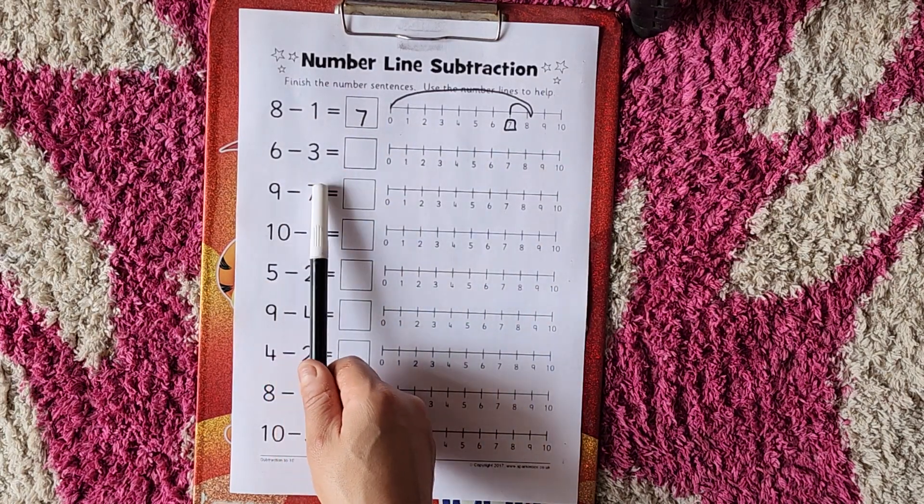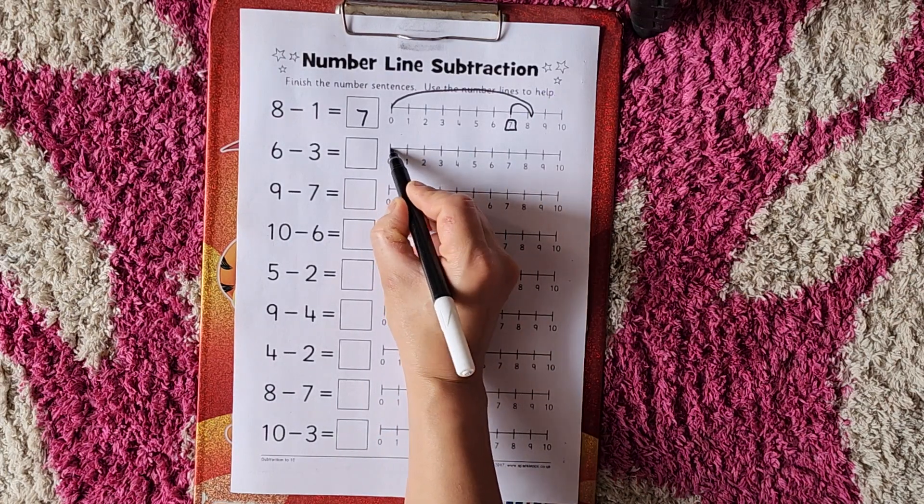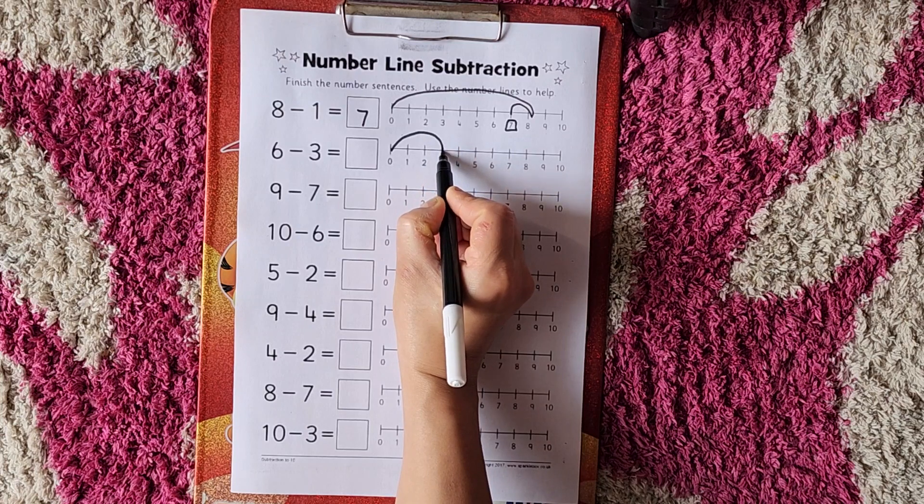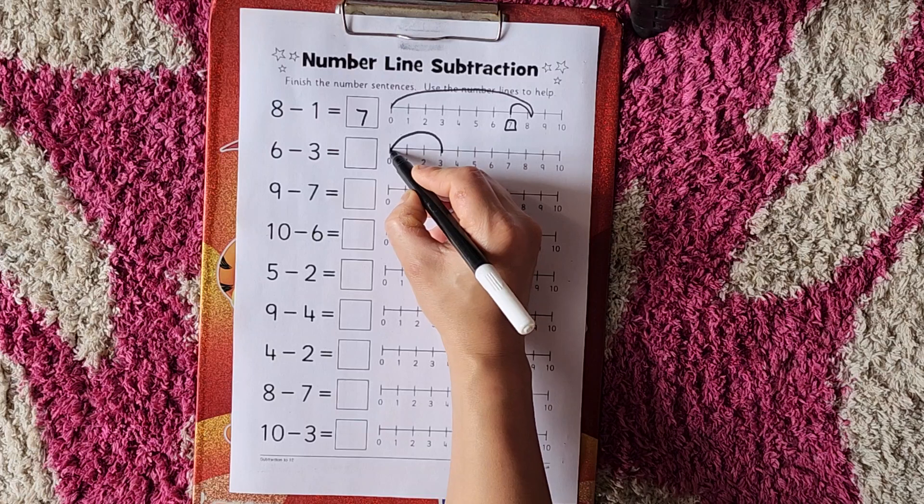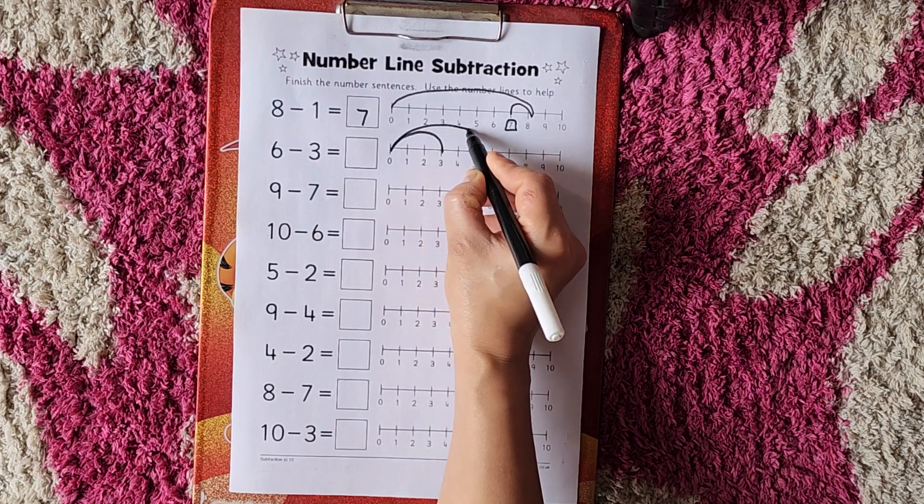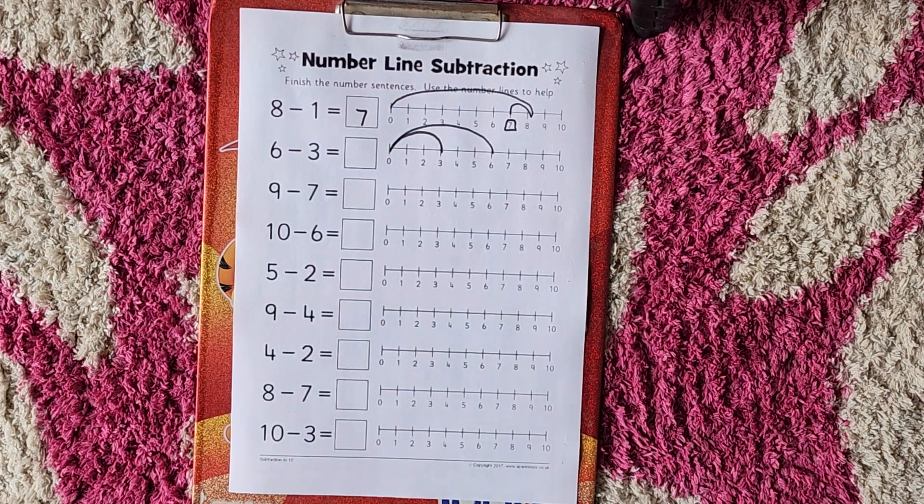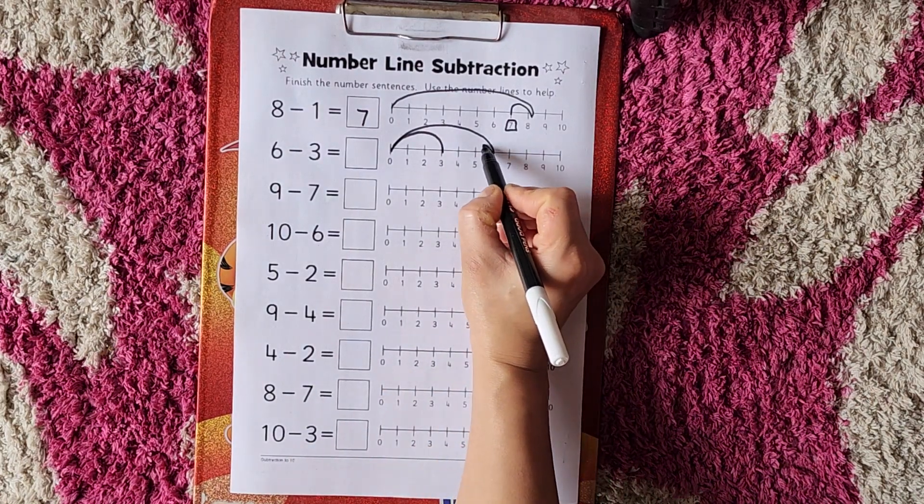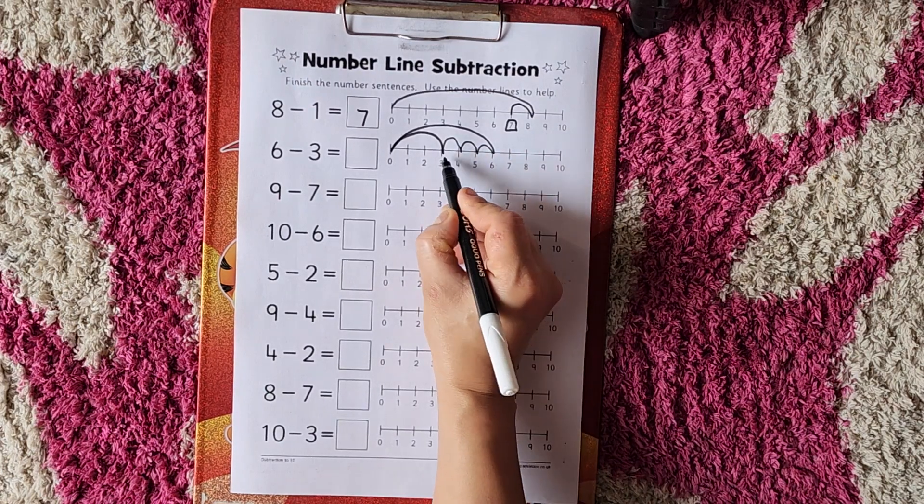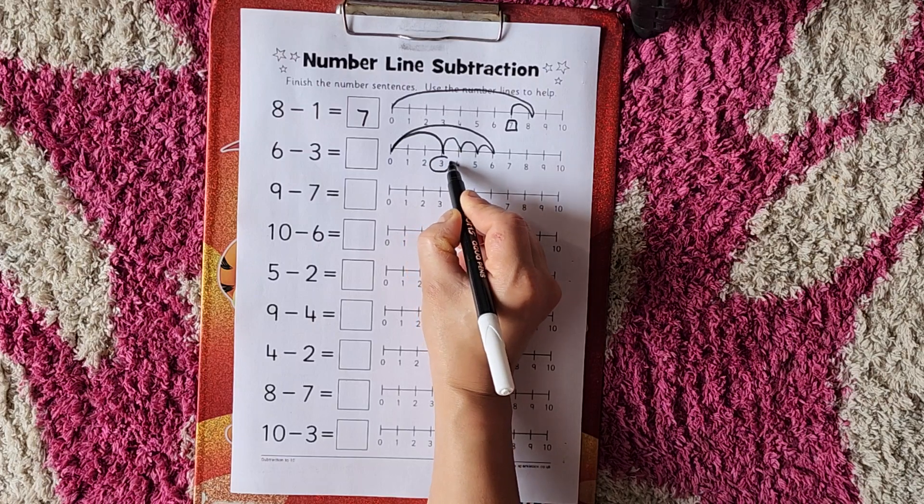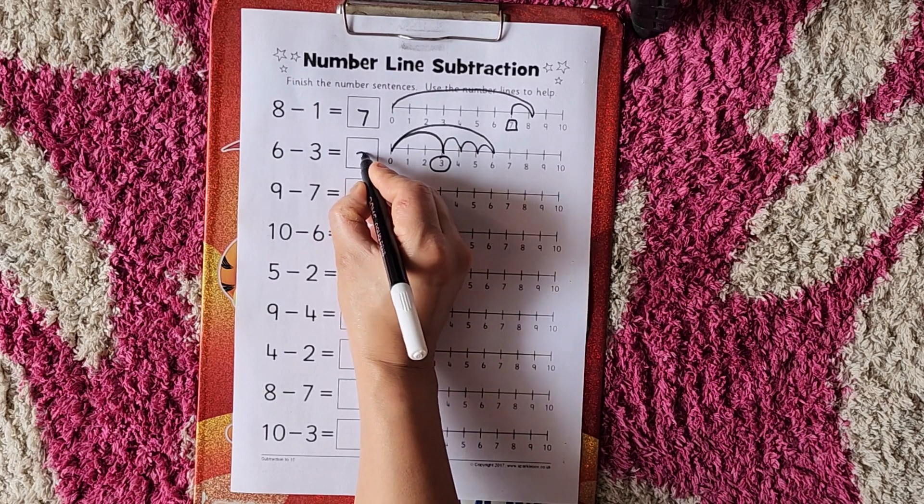Now 6 minus 3. Put the pencil on 0. Go to 3. Sorry, I am very sorry. First of all, put the pencil on 0, go to 6 number. Now 3 steps back: 1, 2, 3. Here we go on 3 number. So 6 minus 3 is equal to 3. Yes.